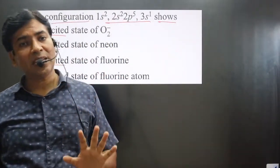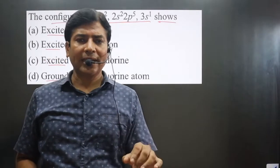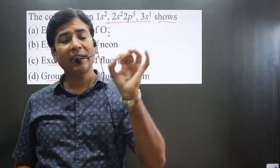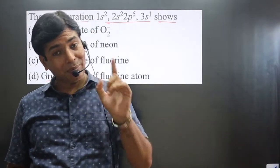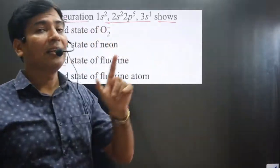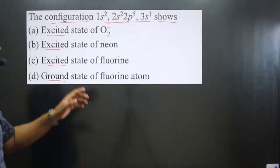In the excited state, electrons jump from lower orbit to higher orbit, but the number of electrons in the atom remains the same. First, we need to identify which atom this electronic configuration belongs to.